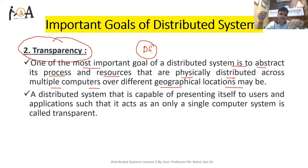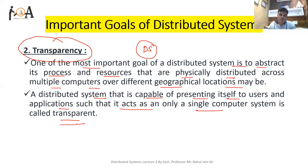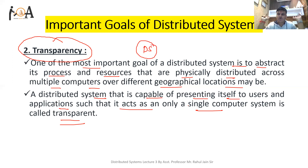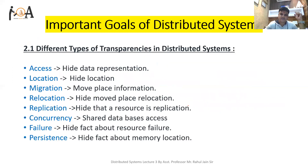We need to abstract its processes from the users. A distributed system that is capable of presenting itself to the user and application such that it acts as only a single computer system is called transparent. The user should feel it is a single system, but in the background many computing devices, mainframes, operating systems, hardware, databases, files, and servers are working from different geographical locations. That is transparency.